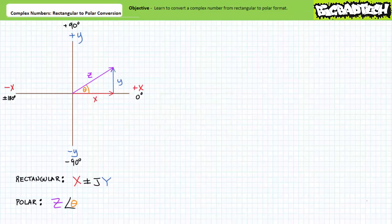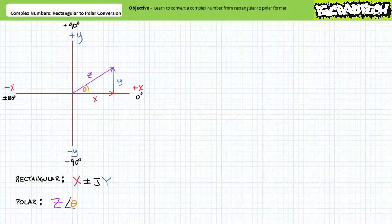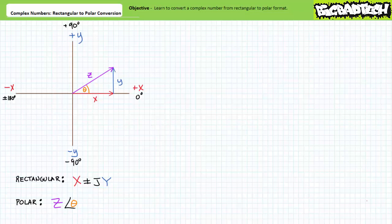In the aforementioned lectures, we learned to express a complex number using rectangular format as a pair of numbers: a real horizontal x component plus or minus an imaginary vertical y component times j. Additionally, a complex number can alternatively be expressed using polar format, giving a magnitude z acting at a specific angle theta. Rectangular format is especially well suited to addition and subtraction, whereas polar format is especially well suited to multiplication and division.